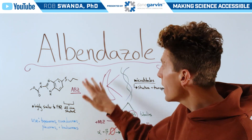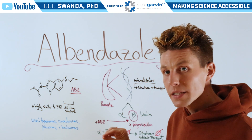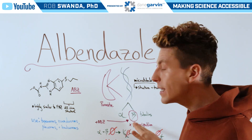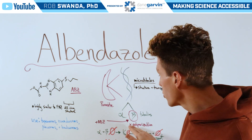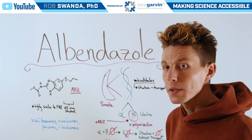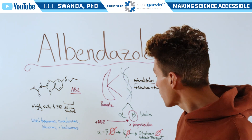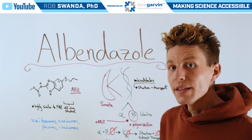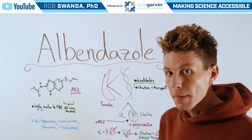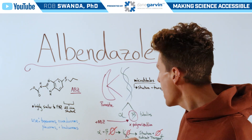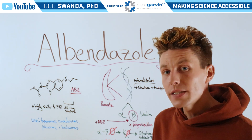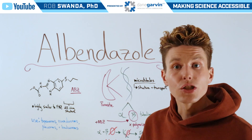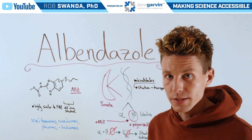But when albendazole is added, it specifically attaches to beta tubulin, preventing that polymerization between beta and alpha tubulins from happening. This decreases the amount of microtubules that are produced, which causes compromise to the structural integrity and decreases those essential nutrient transporters, such as transporting glucose around the parasite.